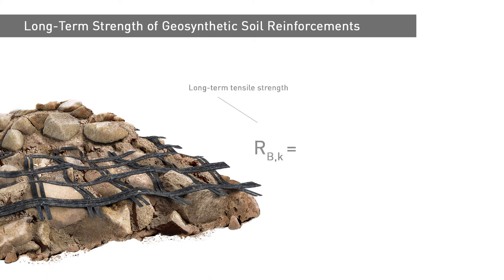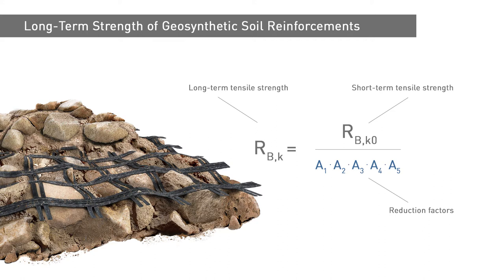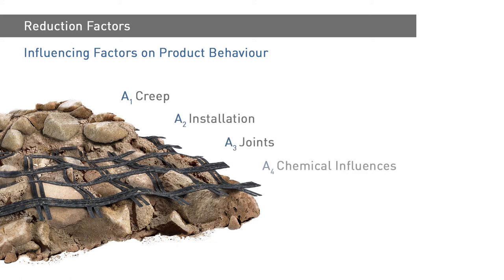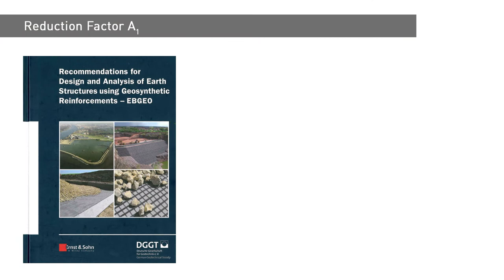The design of geosynthetic installations for soil reinforcement involves the use of the characteristic long-term strength value for the relevant material. This characteristic long-term strength is calculated by applying a series of reduction factors to the characteristic short-term strength of the geosynthetic product. The purpose of the reduction factors is to take into account the factors influencing product behaviour that are likely to be significant in a particular application. Under the German EBGEO, the Recommendations for Design and Analysis of Earth Structures Using Geosynthetic Reinforcements issued by the German Geotechnical Society, the reduction factor for creep rupture behaviour is designated as A1.